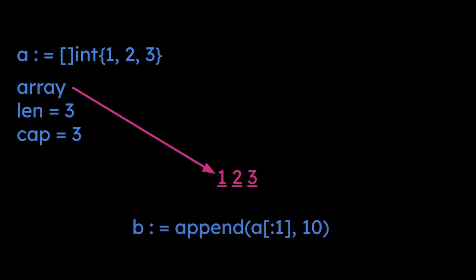Then we create B by taking a sub-slice of A and appending 10 to it. I'm wording it that way for a reason. Here's our sub-slice of A. We're taking everything up to, not including, the first index. So the result is really a slice that just holds one value.